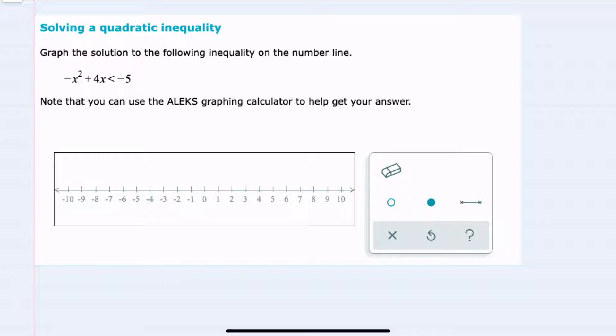...have the quadratic on one side of the inequality and zero on the other side. So here I can either move the minus 5 over to the left to make the right hand zero or...